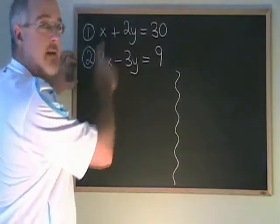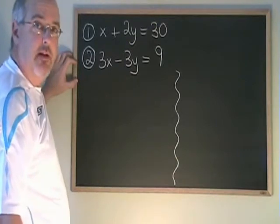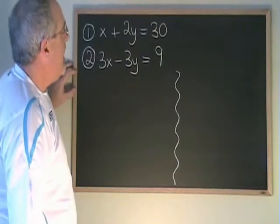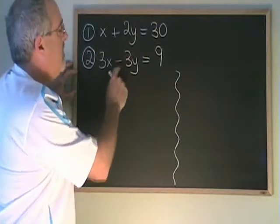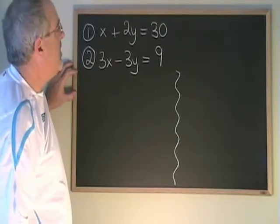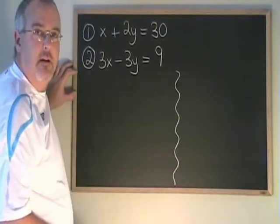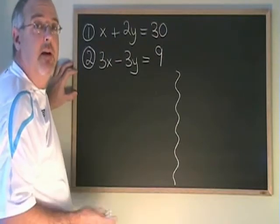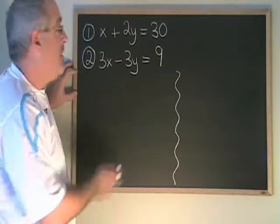I'm going to work with the y's again, like I have in the previous two examples. But how do I make positive 2 and negative 3 equal and opposite? I can't just multiply one of these equations by a single whole number and make it equal and opposite to the other equation in the y's.